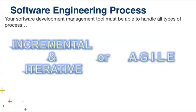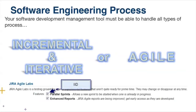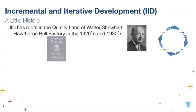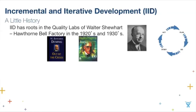The IID — incremental and iterative development — option is hidden in the Jira Agile labs: the option that lets you run sprints simultaneously. A little history on IID: it started back in the 1920s and 30s with Mr. Shewhart, who is really the guru of quality. He suggested that iterative process where you plan something, do it, study how you did, decide if you need to change something, act on those changes, and iterate. He is really the grandfather of that iterative process.